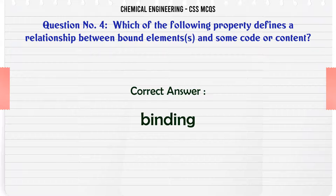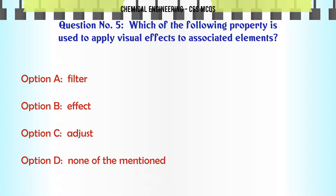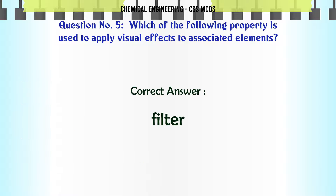Which of the following property is used to apply visual effects to associated elements? A. Filter. B. Effect. C. Adjust. D. None of the mentioned. The correct answer is: Filter.